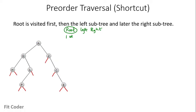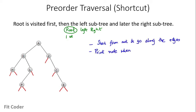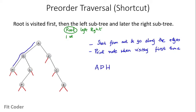Whenever we are visiting a node for the first time, we print it. Start from root and go along the edges. We start from A — this is the first time we are visiting it, so we print it. Then we go to D — first time, so we print it. Then we go to H — first time, so we print it.